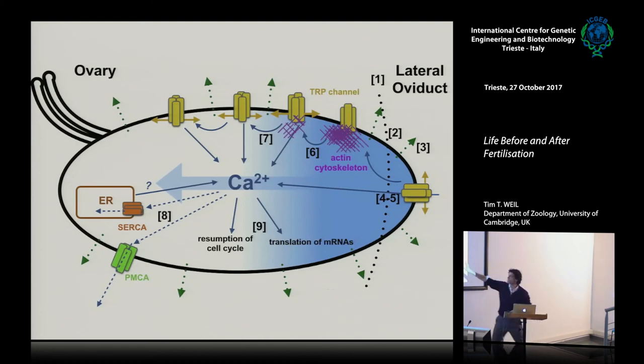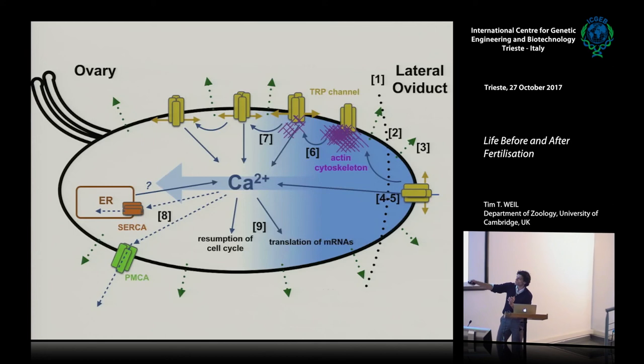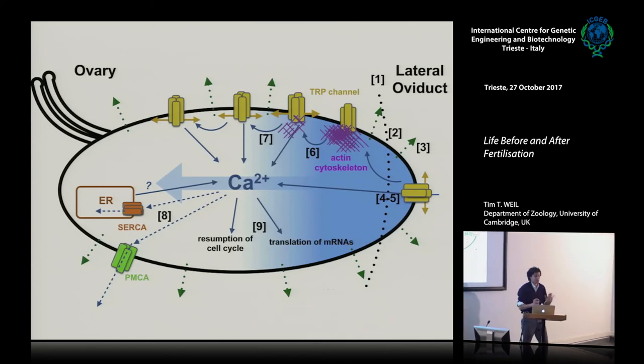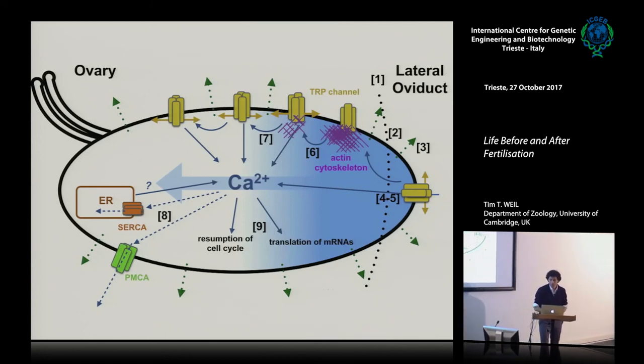The overall prediction is that as the egg enters the lateral oviduct, a change in fluid causes water to enter the egg, changing the actin cytoskeleton and opening mechanosensitive channels, spreading the calcium wave from posterior to anterior. Thank you to my advisor Liz at Princeton, Tudor, Bruno who did the microRNA work, Catherine Rabui for electron microscopy collaboration, my postdoc advisor Alon, and my lab and funding sources.